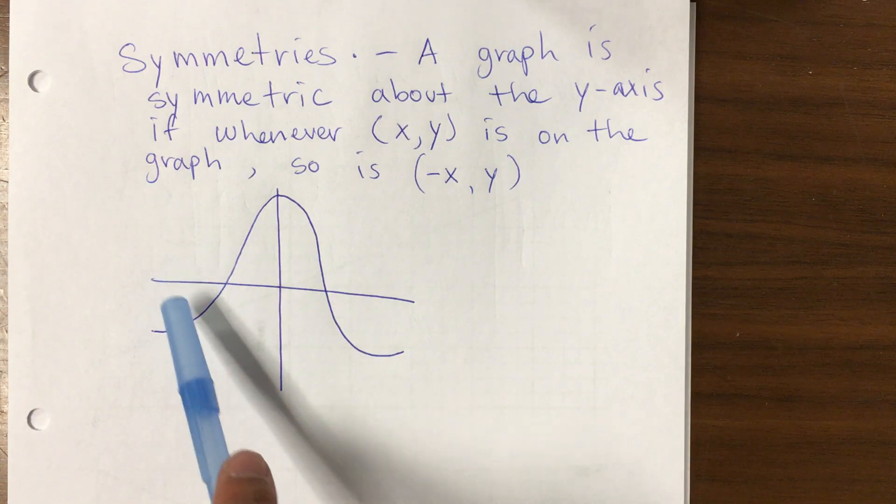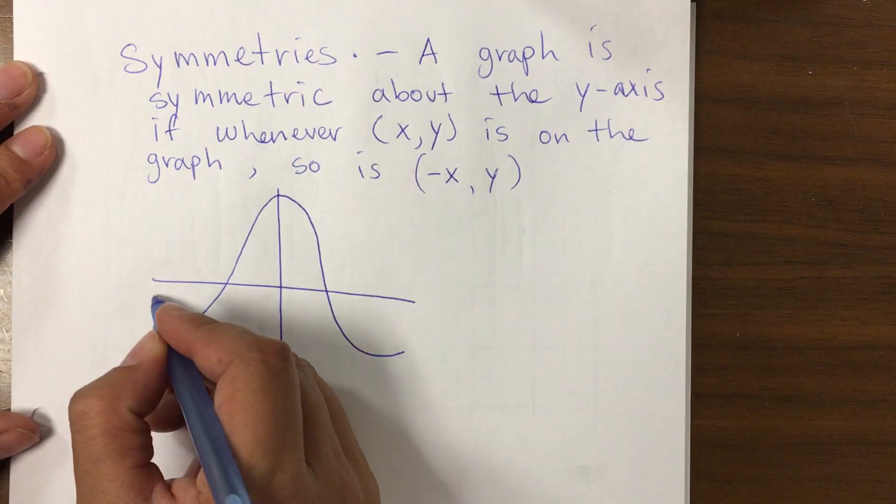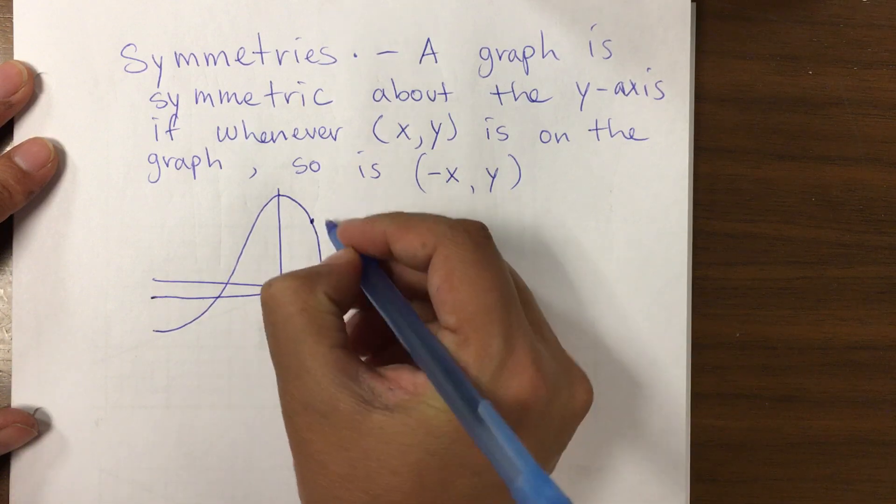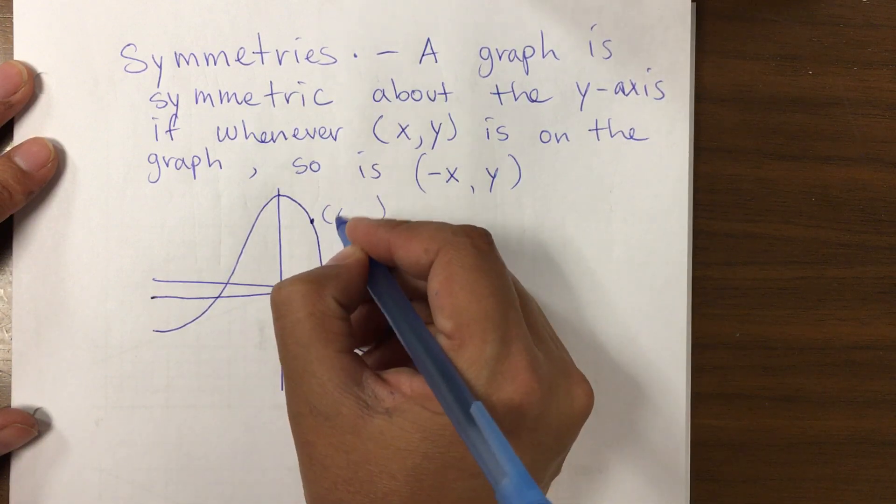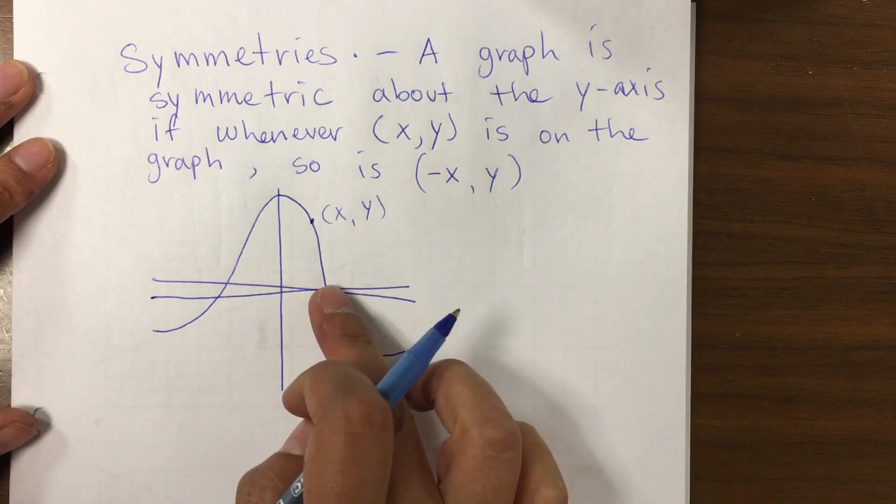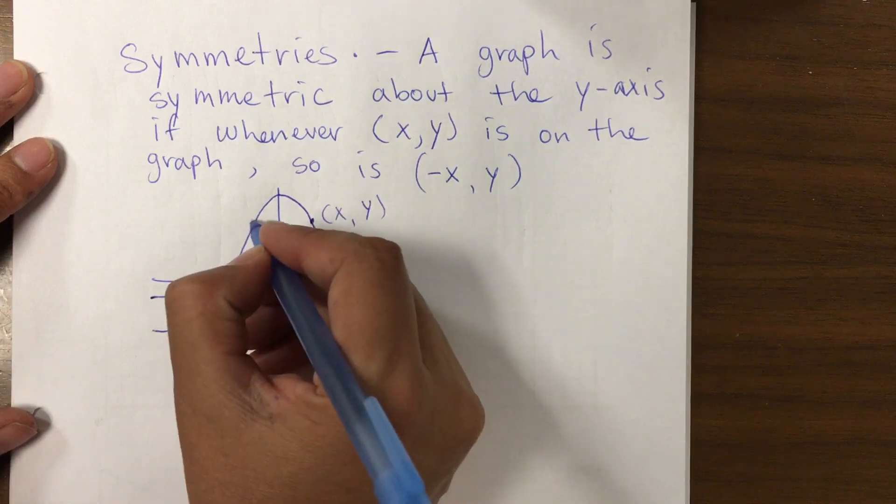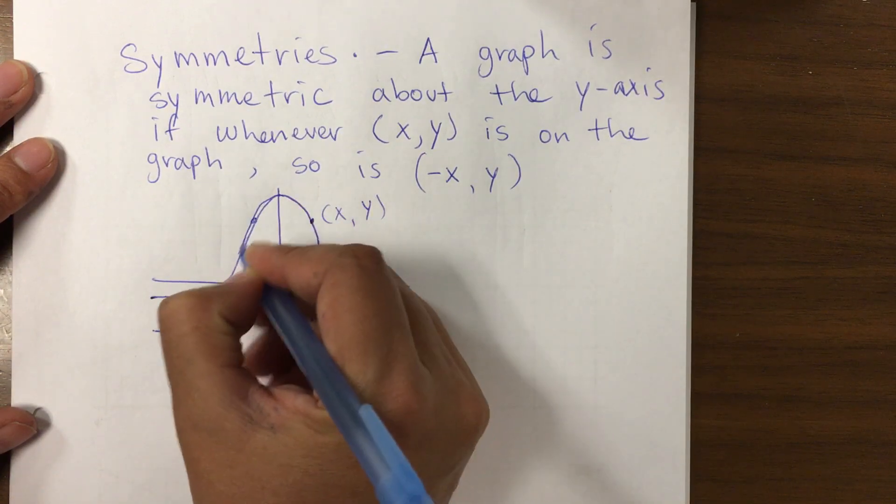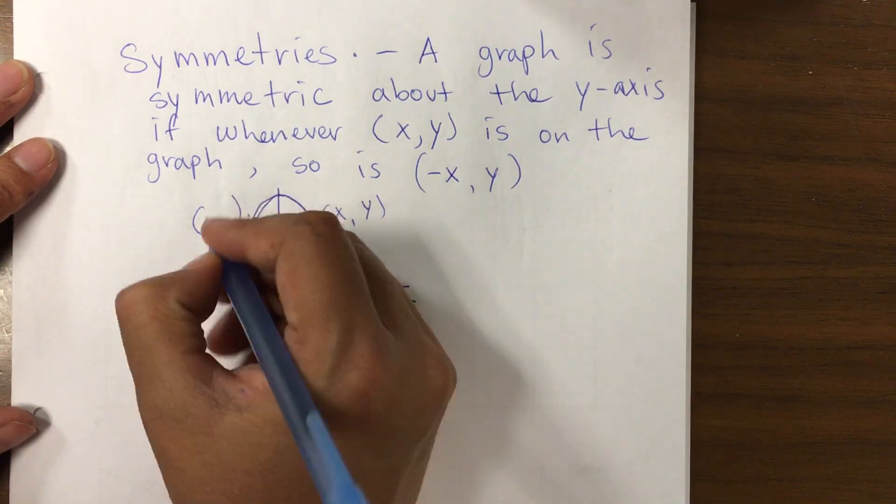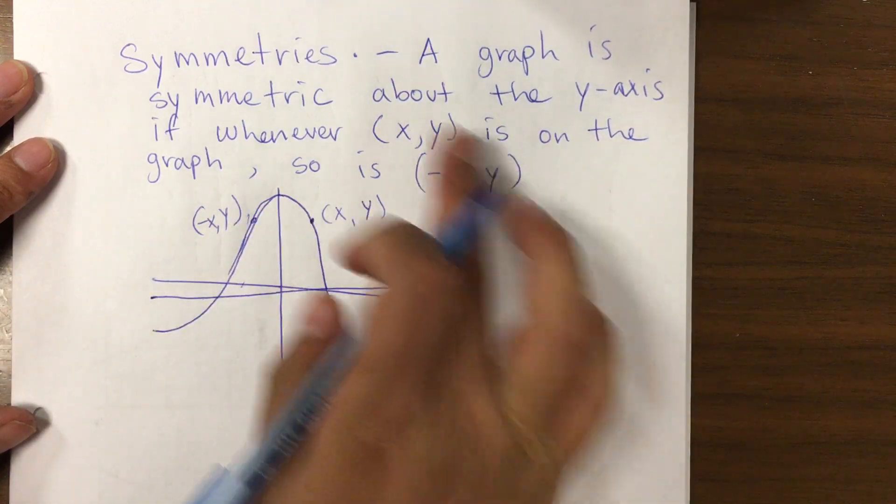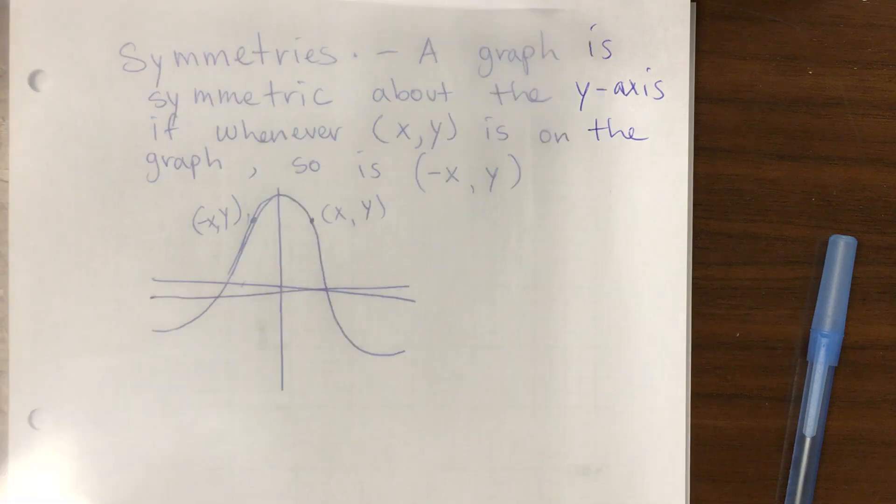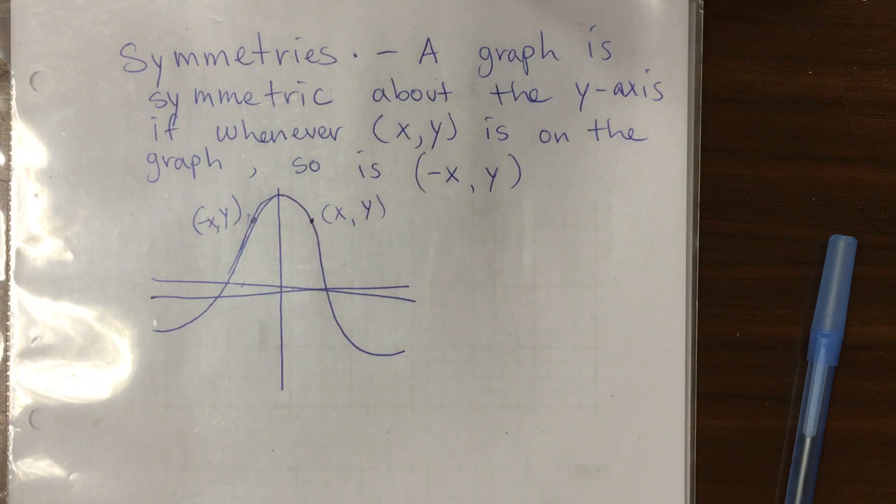If I have a graph like this, and this is not perfect, but it's just to give you an idea. Then we say that any point in here, so in here it will be a positive x, maybe positive 2 and positive 4. So both x and y are positive. Then this point that matches on the other side will be negative x positive y. That's what this definition means.